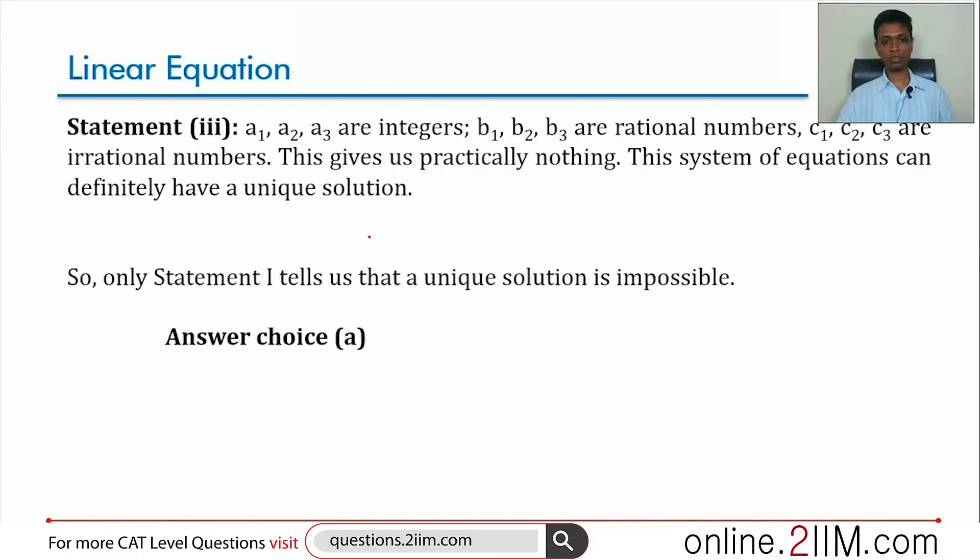Statement 3. a1, a2, a3 are integers. b1, b2, b3 are rational numbers. c1, c2, c3 are irrational. We could have 1, 2, 3, 7, 3.5, root 2, root 3, root 5 as our coefficients.